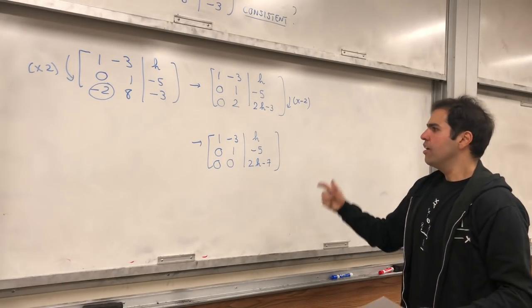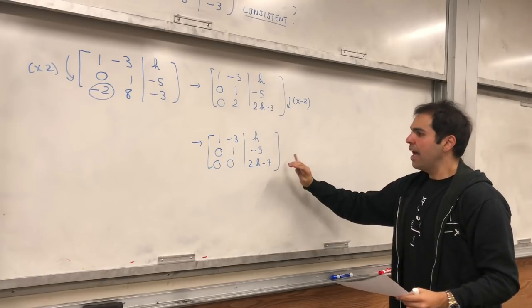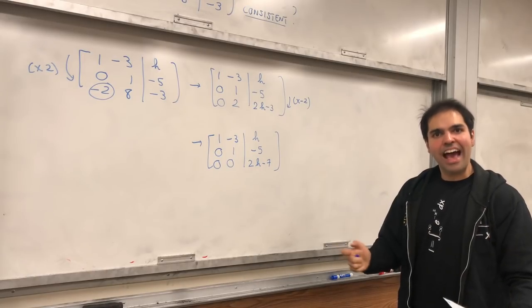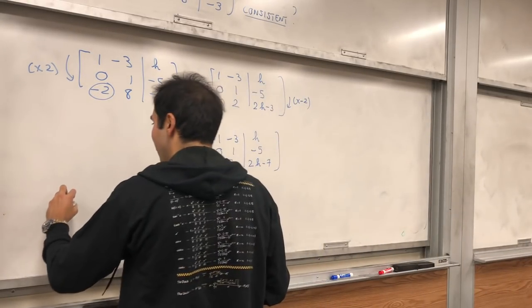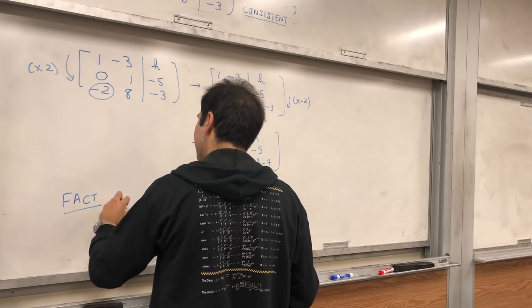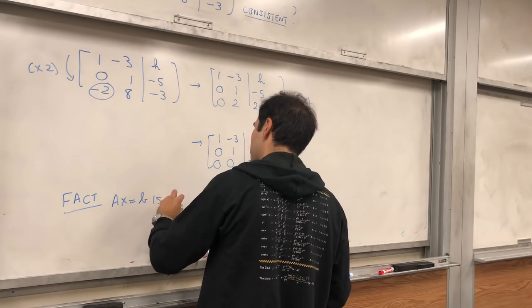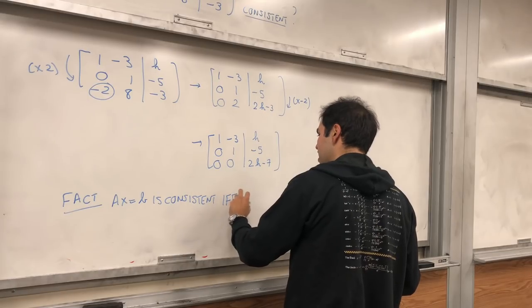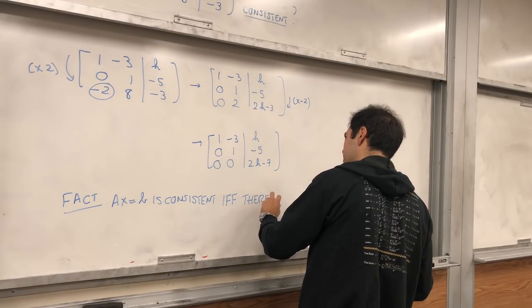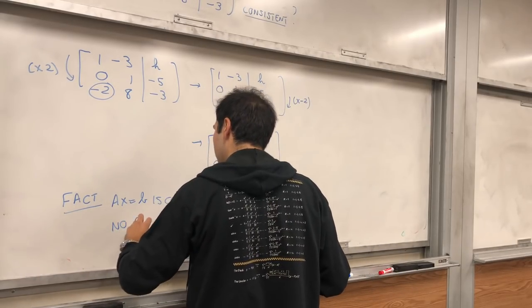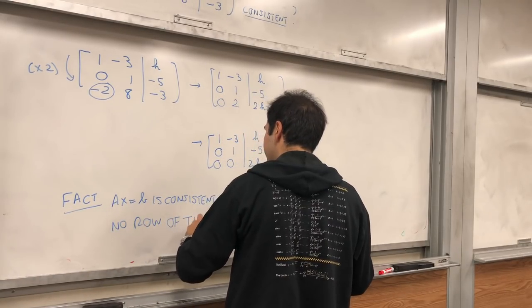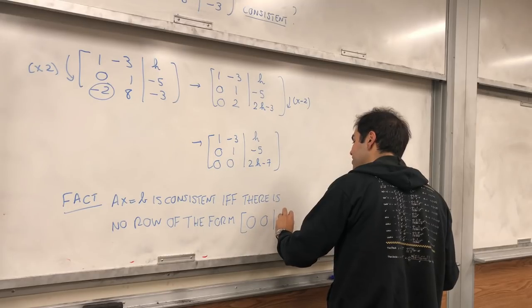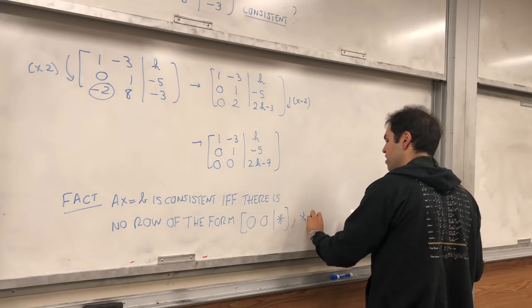So the question is then, for which h is this consistent? And for this, you need a very important fact that tells you exactly when a system is consistent. So fact, Ax = b is consistent if and only if there is no row of the form, in this case, a bunch of zeros and something non-zero.